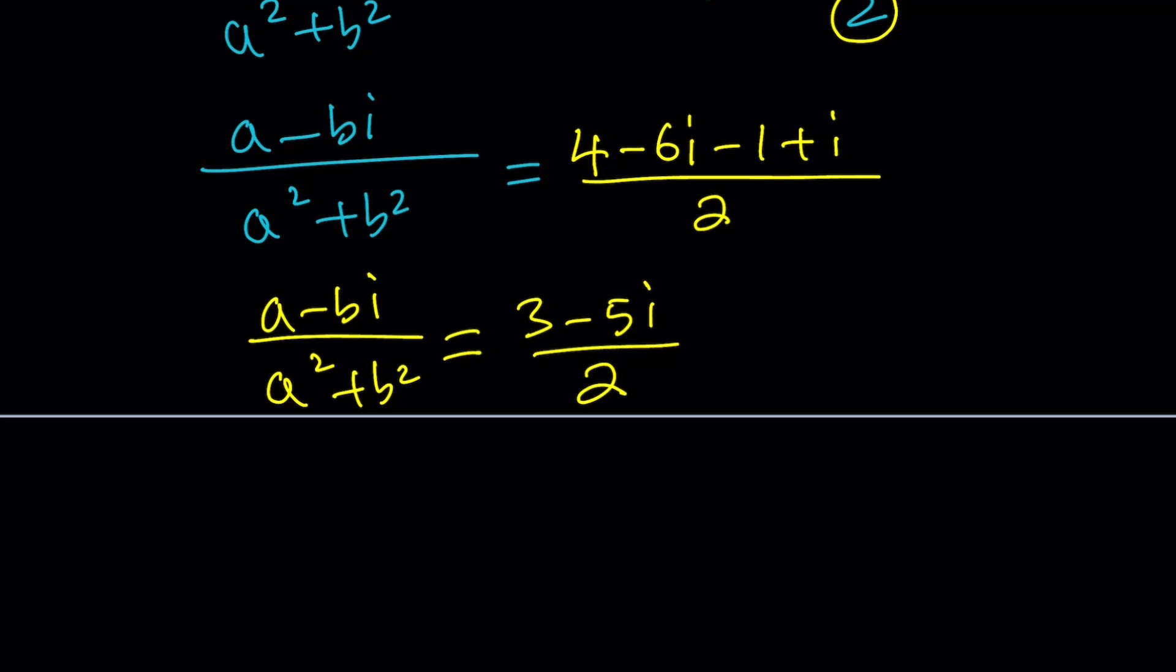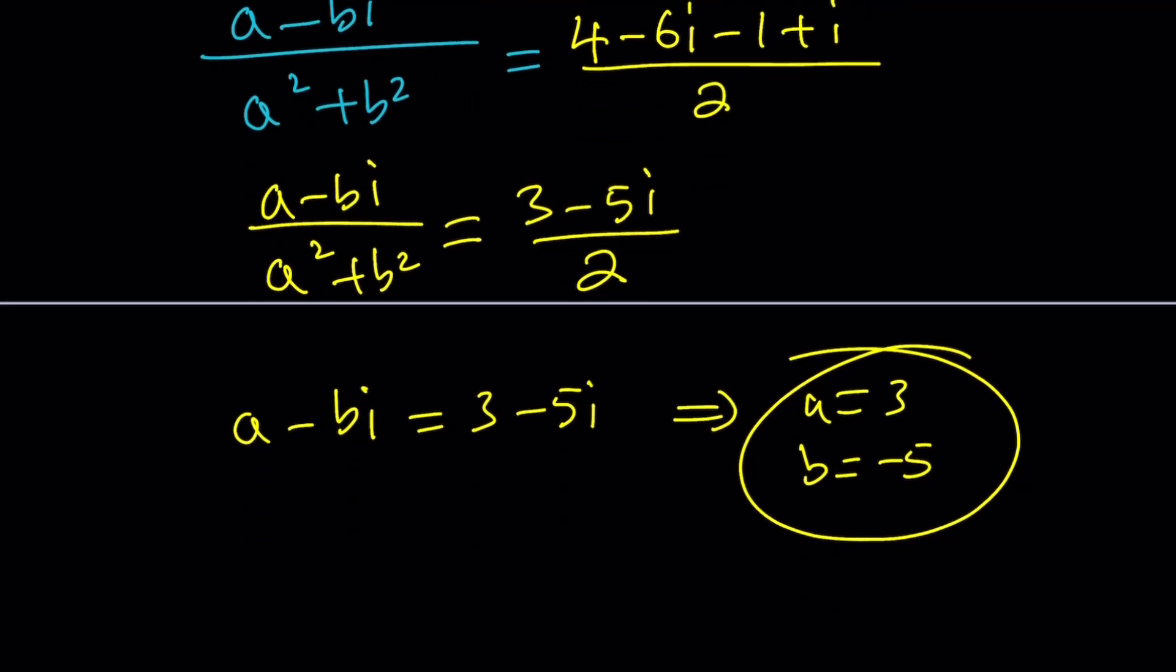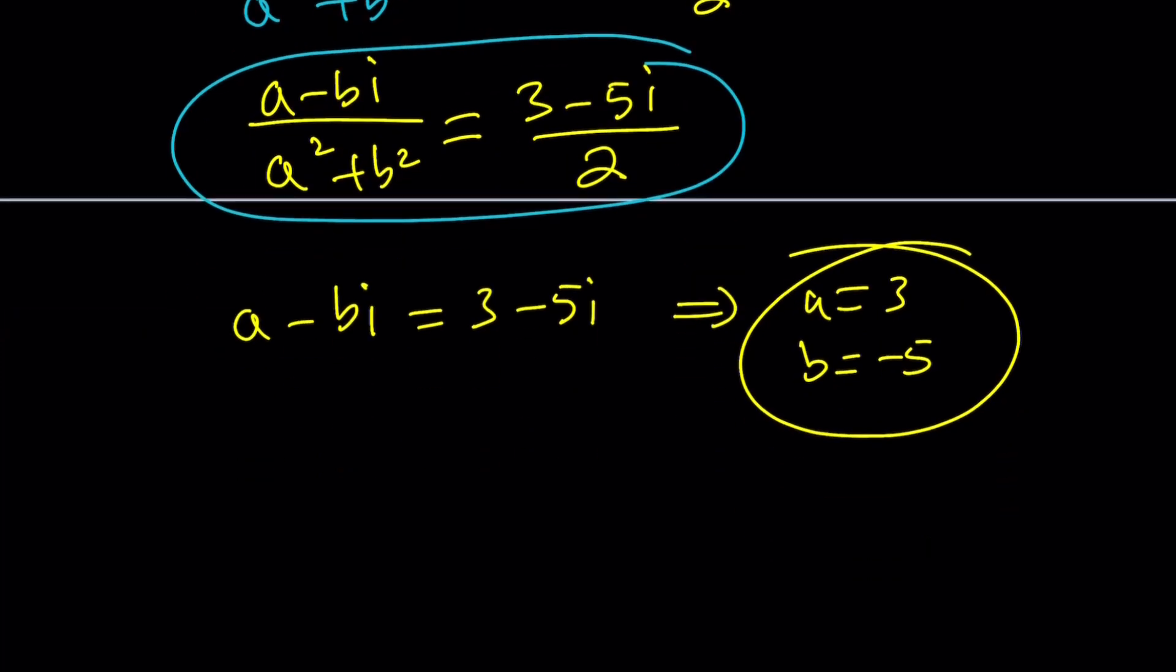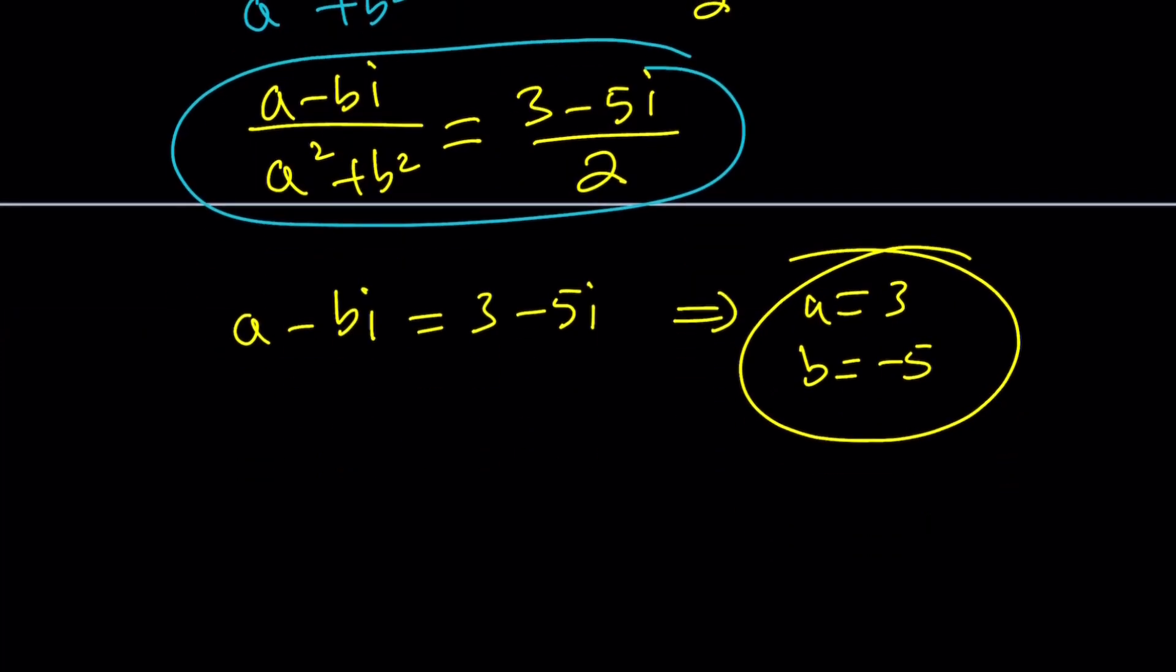But here's the problem. If A minus BI equals 3 minus 5I, which indicates A equals 3 and B equals negative 5, this is not going to give you 2 when you add the squares up, right? So that's a little problematic. We could work with multiples but that's going to be too painful. Instead let's go ahead and do it a little differently. How?